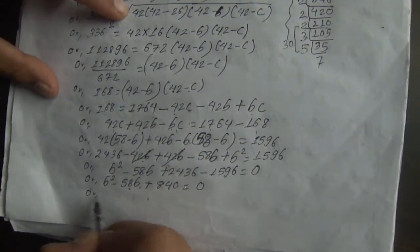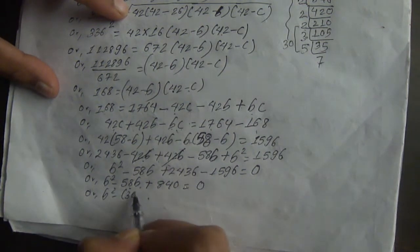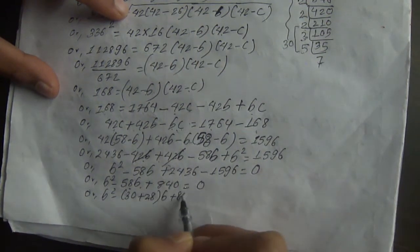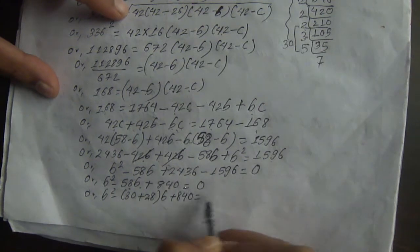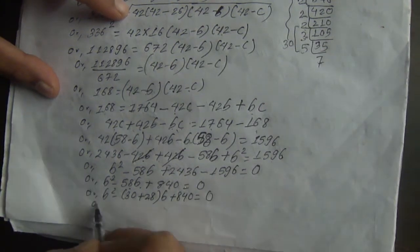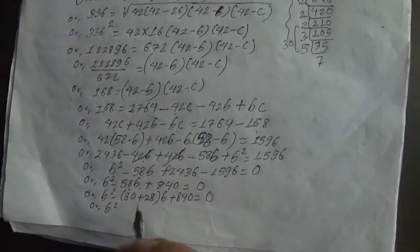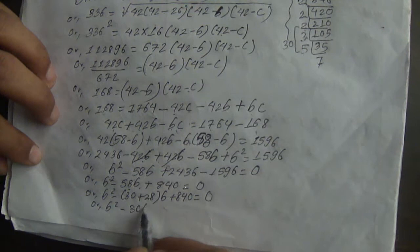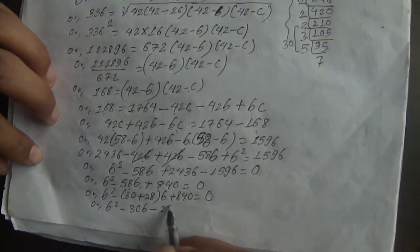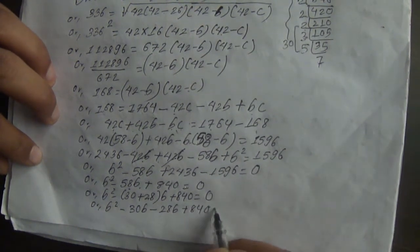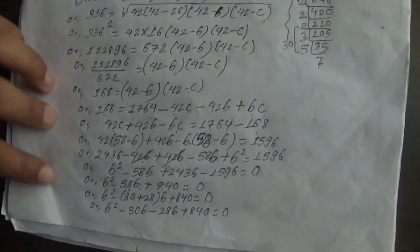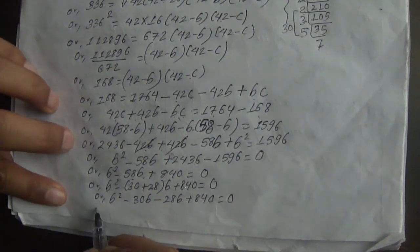We factor the quadratic as B squared minus 30B minus 28B plus 840 equals 0, giving us (B minus 30)(B minus 28) equals 0.